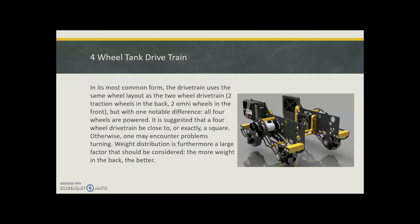Four wheel drive train is a more common form. The drive train uses the same wheel layout - two traction in the back and two omni in the front, but with a noticeable difference. In this, all four wheels are powered.